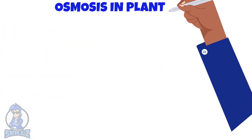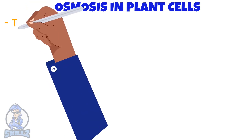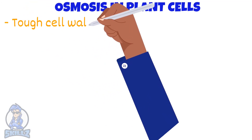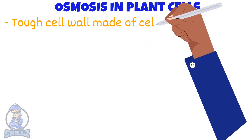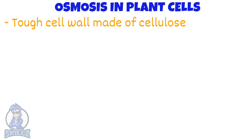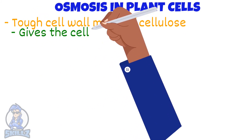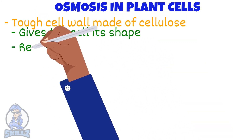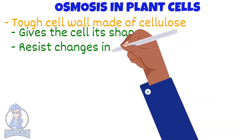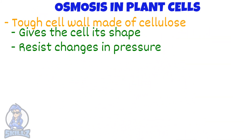Osmosis in plant cells: there is a tough cell wall made of cellulose. This cell wall gives the cell its shape and can resist changes in pressure. But unlike cell membranes, it is freely permeable to water.